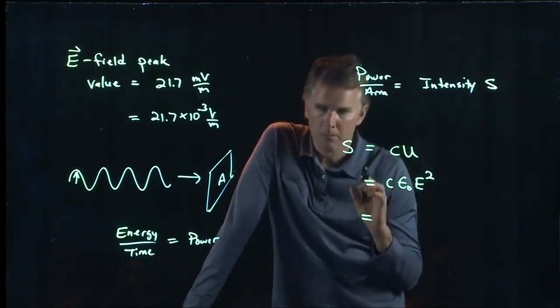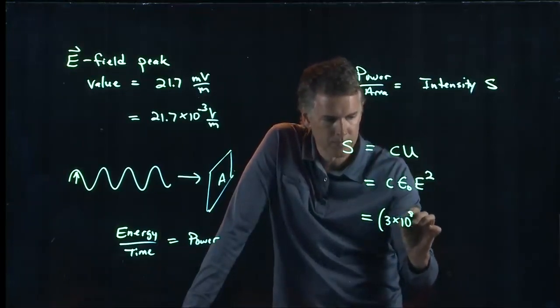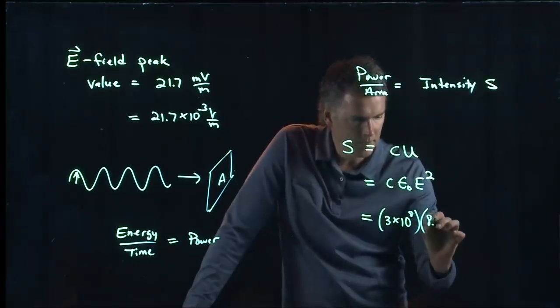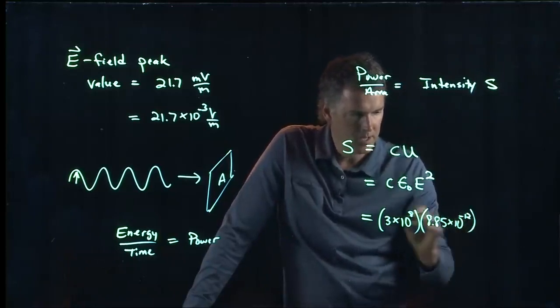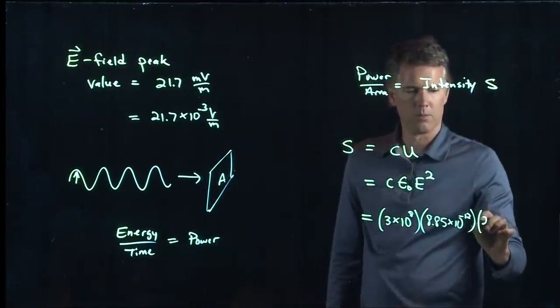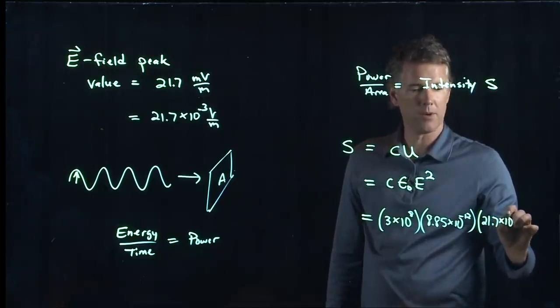Let's try it and see if it works out. So 3 times 10 to the 8th is c, epsilon naught is 8.85 times 10 to the minus 12, E we just said was 21.7 times 10 to the minus 3.